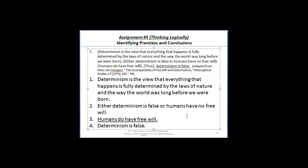Okay, and now let's see if this works this way. Determinism is the view that everything that happens is fully determined by the laws of nature and the way the world was long before we were born. One. Two, either determinism is false or humans have no free will. Humans have no free will, therefore determinism is false.